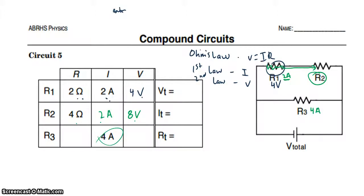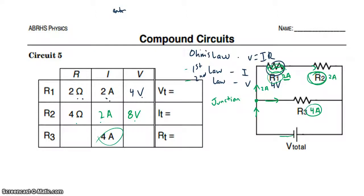Now let's apply the first law. I've got 2 amps going through R1 and R2, and 4 amps going through R3. Here's the junction — the current into the junction must equal the current out of the junction. The current through one path is 2 amps and through the other path is 4 amps. So the current into the junction is 2 plus 4, which means the total current must be 6 amps.